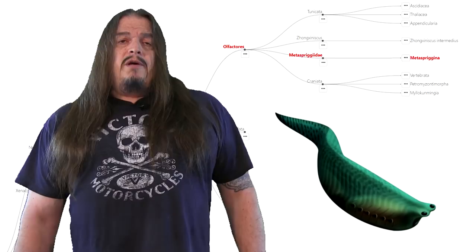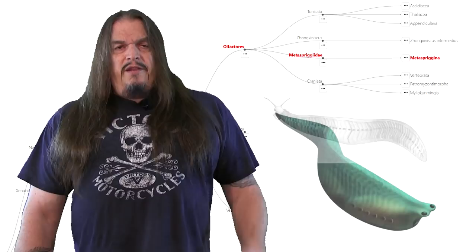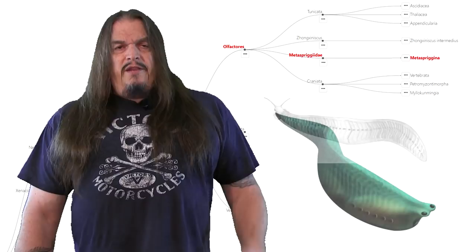A sister clade, Metaspriggina, is another ancient genus of proto-fish from the third epoch of the Cambrian period. They look a bit like Pikaia, except that the optic tentacles have been replaced by eyes.